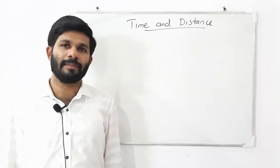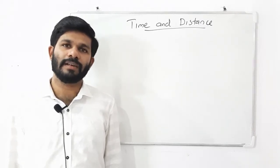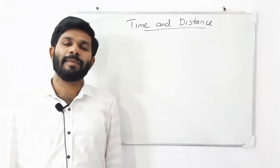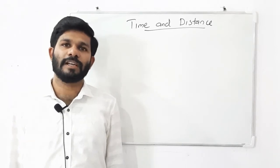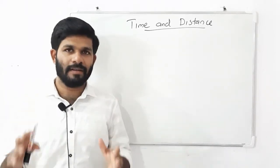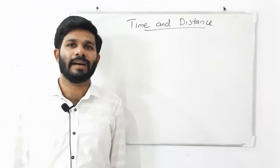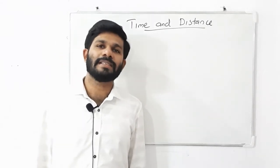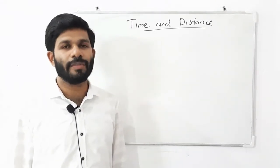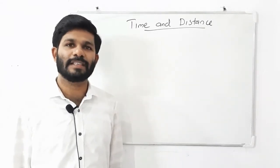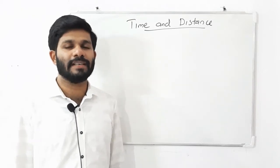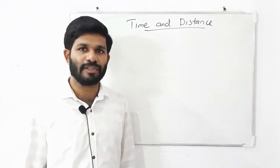Today we are going to discuss the topic of Time and Distance. If you ask questions about Time and Distance, we will talk about some basic things. In time and distance, three quantities are speed, time, and distance. These three are connected by equations.